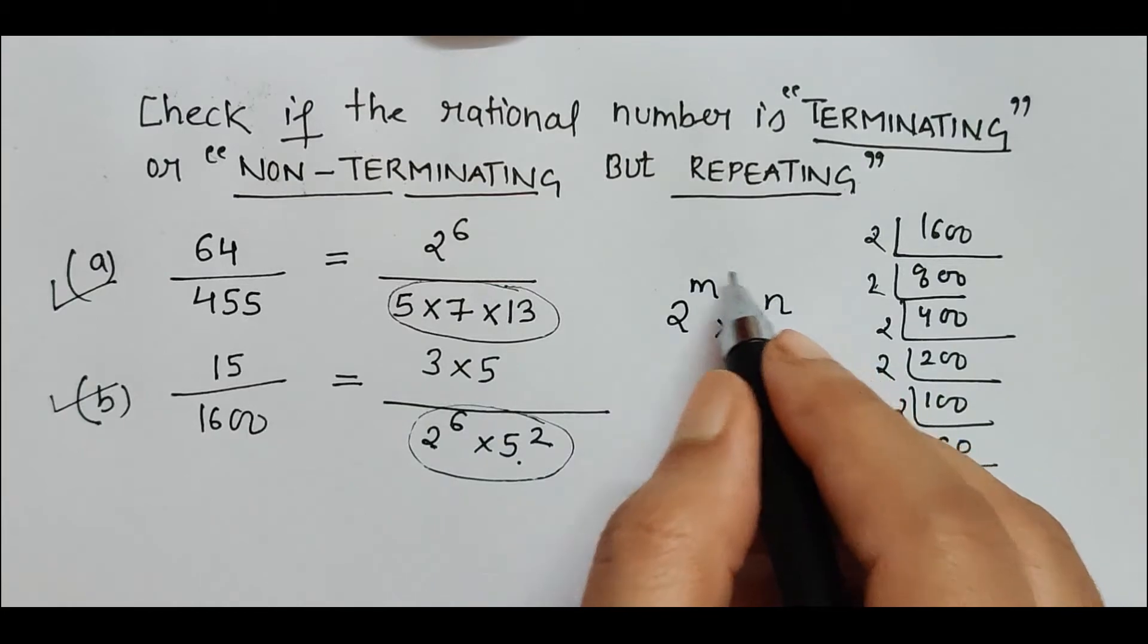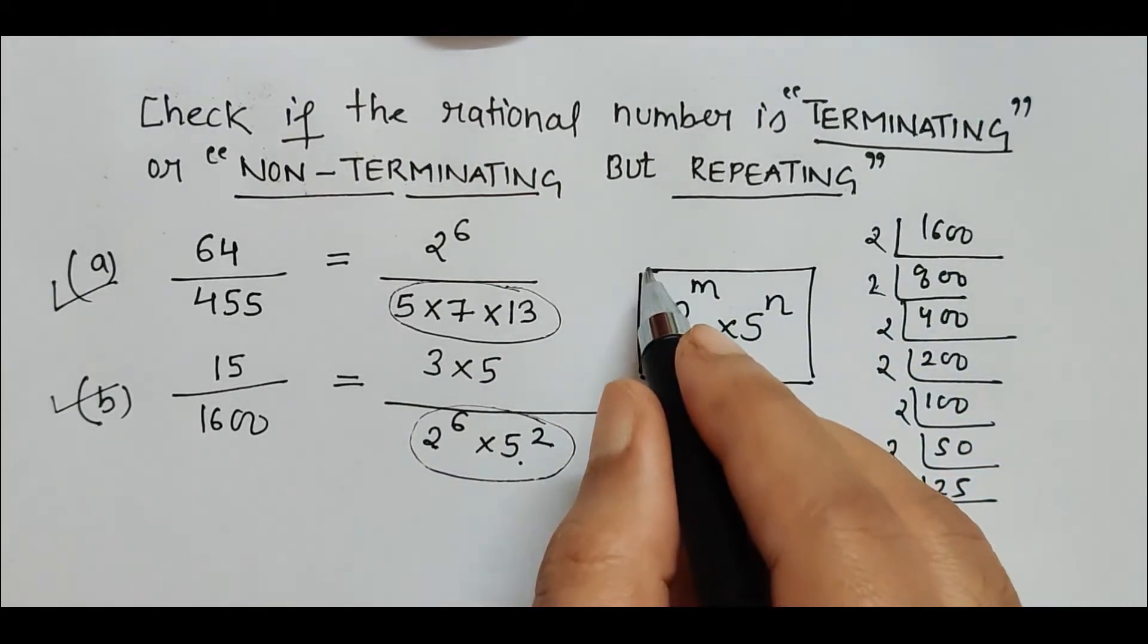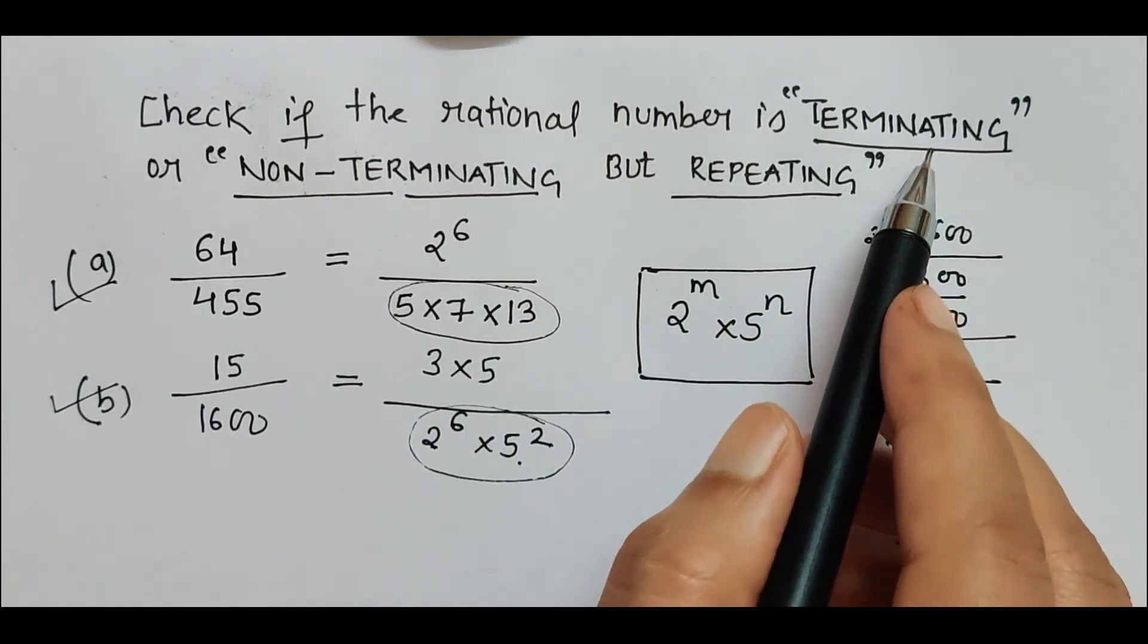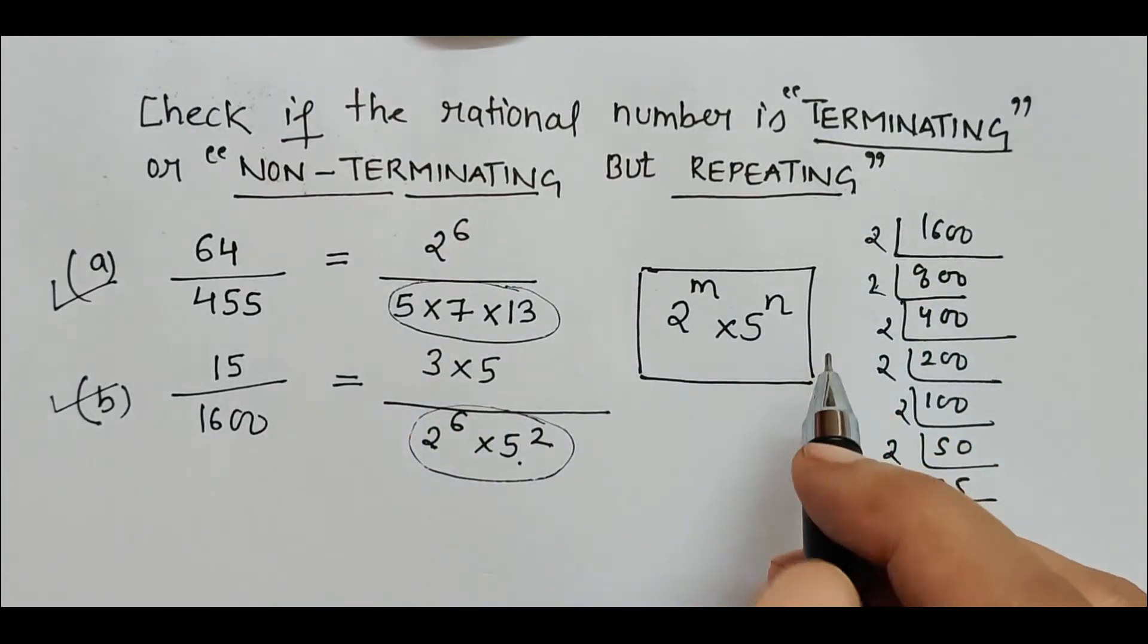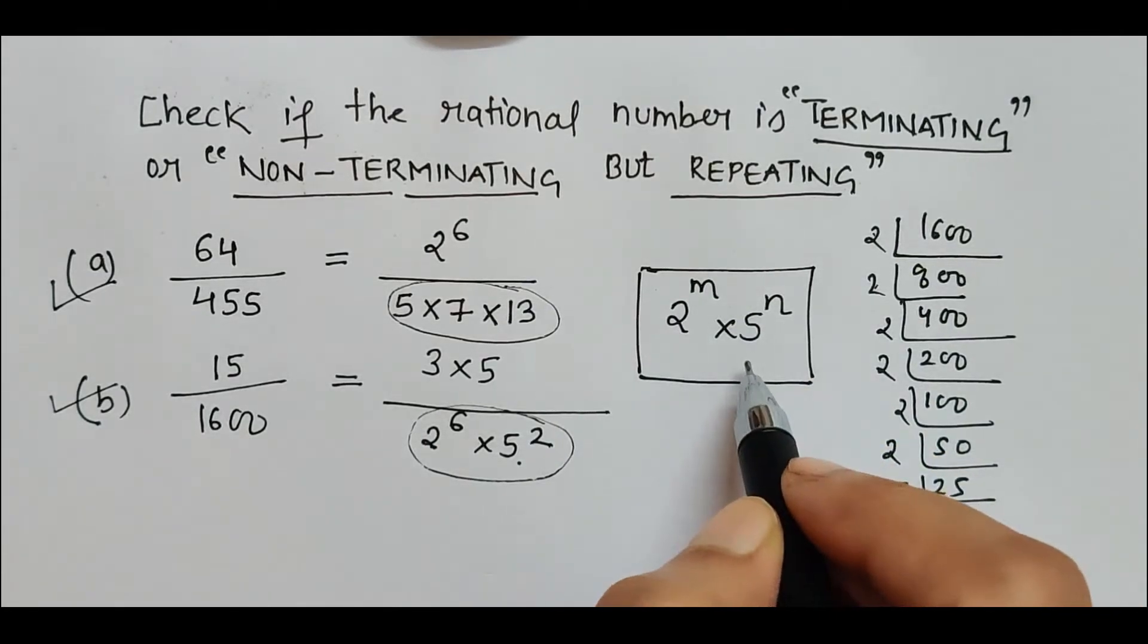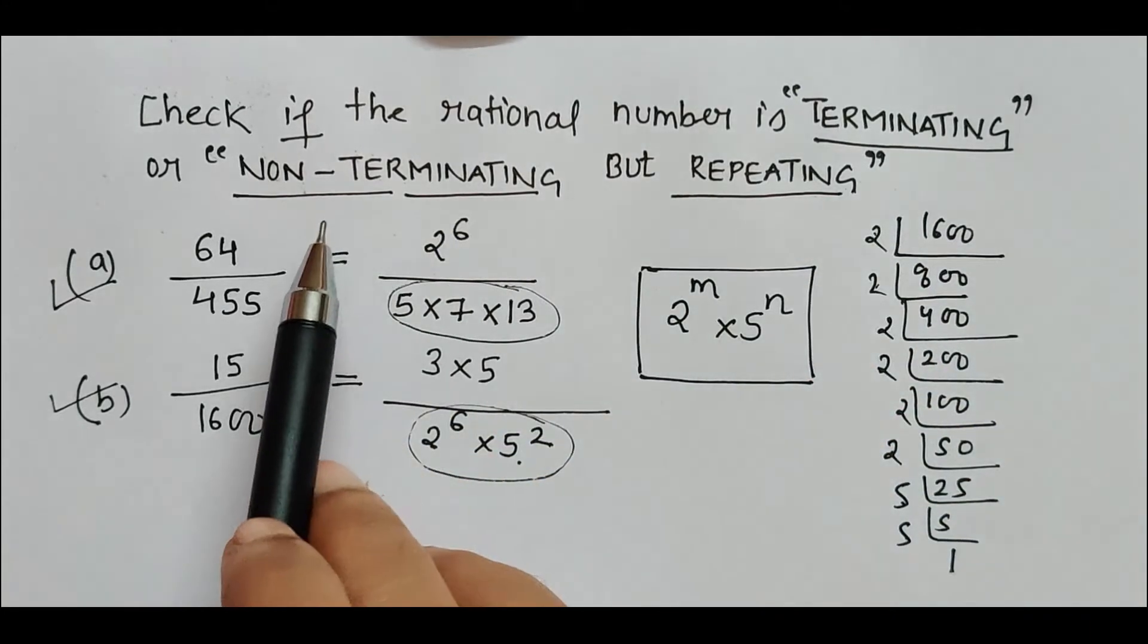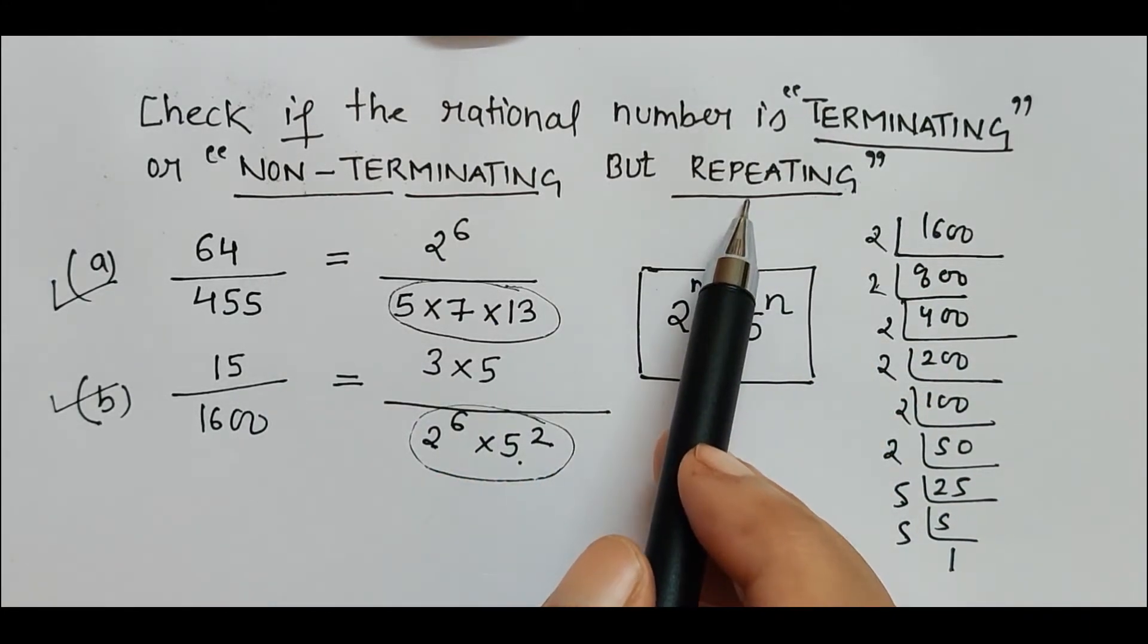This plays a very important role in determining if any rational number is terminating or non-terminating but repeating. If the denominator is in this form only, then it is terminating. Otherwise it is non-terminating but repeating.